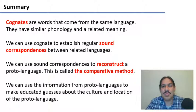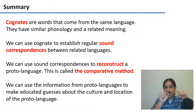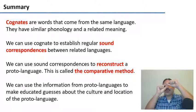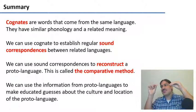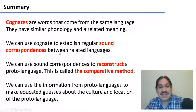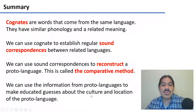In summary, cognates are words that probably come from the same language — they have similar phonology and related meanings. So fish and fisk in German and Swedish, for example, probably come from some Proto-Germanic language, which is related to Latin, which ultimately came from Proto-Indo-European. We can use cognate sets to establish sound correspondences between languages, and ultimately to reconstruct a proto-language — this is called the comparative method. It can give us information about what the proto-language was like, but also what the cultures of its speakers were like.